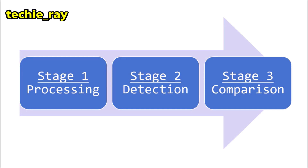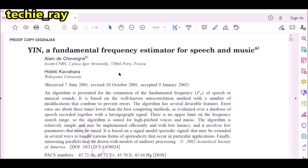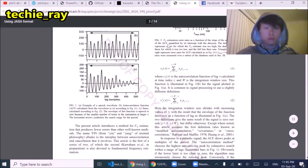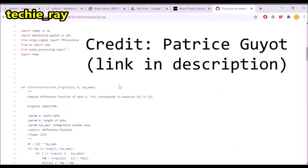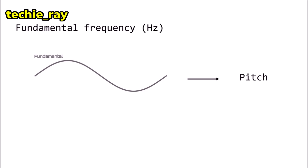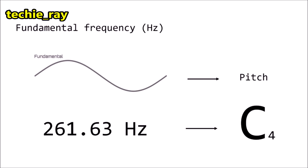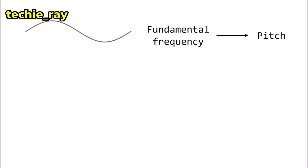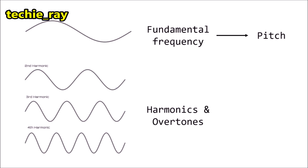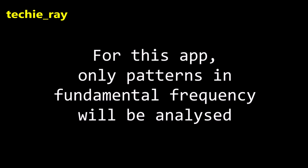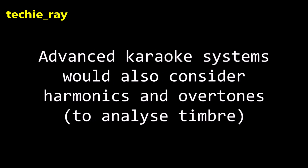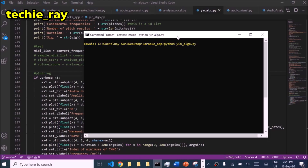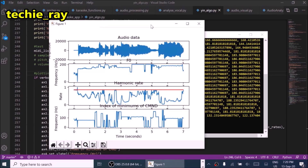Stage 2 is detection. Here, the algorithm detects the pitch and volume of the acapella version. This is handled by the Yin algorithm, which is a big-brained algorithm theorized by Alain Deshevigny and Hideki Karahara. He wrote a lot of maths, but fortunately I found some good code on GitHub. Now, what determines pitch is the fundamental frequency of a sound wave. For example, a fundamental frequency of 261.63 Hz makes a middle C sound. However, the same notes can sound different across instruments — that's due to harmonics and overtones which influence the unique sound, or timbre, of the note. For our purposes, we're only concerned with fundamental frequency — a note is a note — though more advanced karaoke apps would consider harmonics and overtones. The app then keeps a record of the pitches and volume of the reference song for later comparison with our singing.